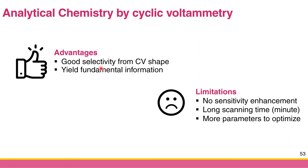Cyclic voltammetry is very useful because it yields a lot of redox mechanism information and enables qualitative analysis of electroactive species from the CV shape. However, it has some limitations: it doesn't greatly improve sensitivity or limit of detection, and scanning one CV takes at least half a minute or more, making it slower than techniques like amperometry. Also, there are more parameters to optimize since the CV shape depends on scan rate and scanning potential. Nevertheless, if you work with electrochemistry, cyclic voltammetry is the most fundamental and important technique for understanding electroactive species.